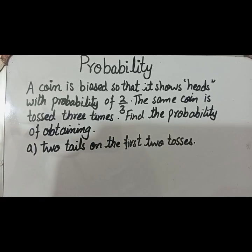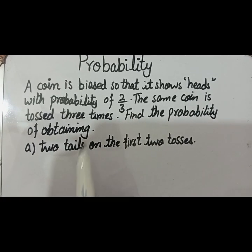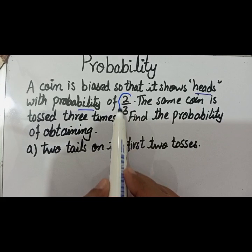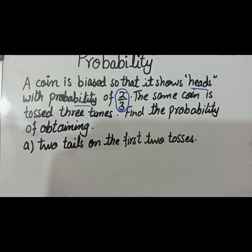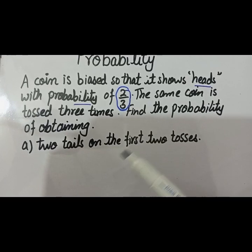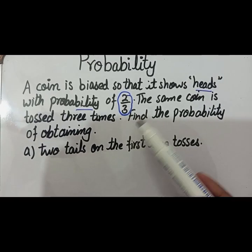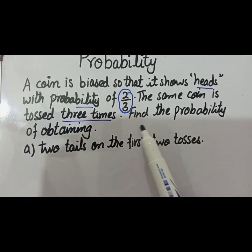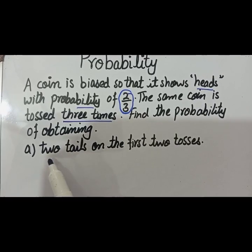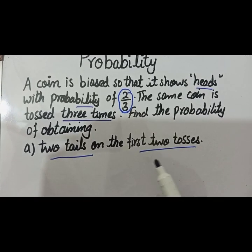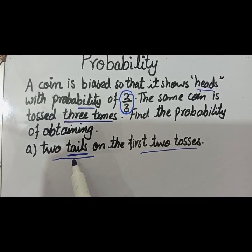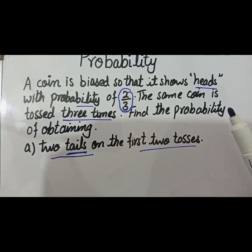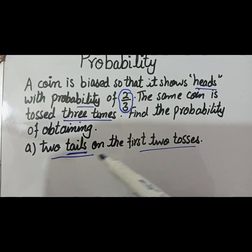Let's move toward the next question of probability. A coin is biased so that it shows heads with the probability 2 by 3. This means when you toss the coin, the probability of head is 2 by 3. The same coin is tossed three times. You have to find the probability of obtaining two tails on the first two tosses. The question asks for tails, but the statement gives probability of heads, so first you need to find the probability of tails.